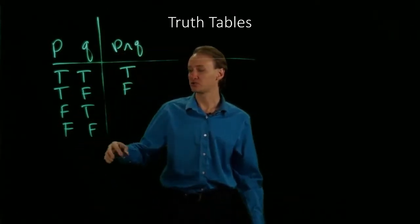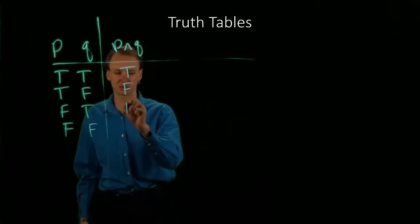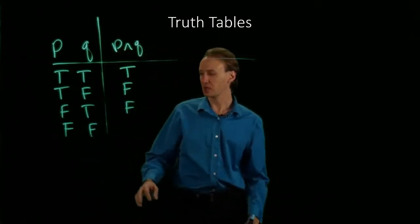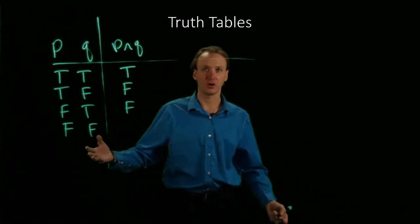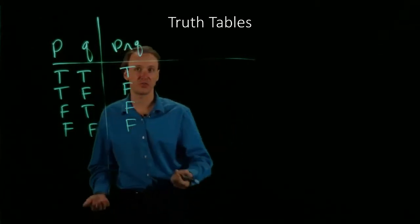If P is false and Q is true, that's still false. And if both P and Q are false, then AND of both of those is false.